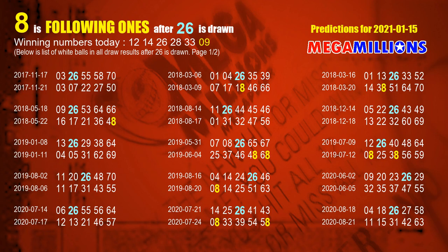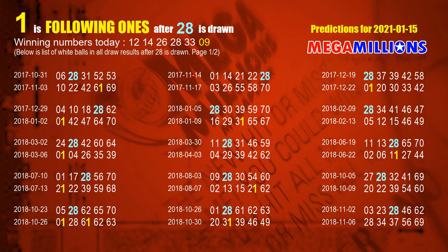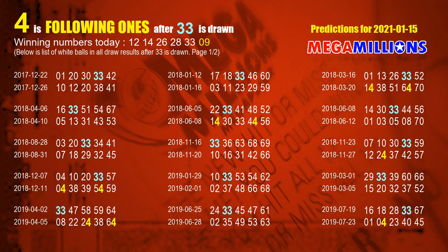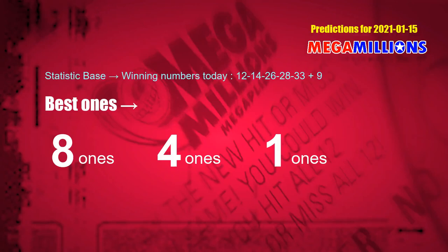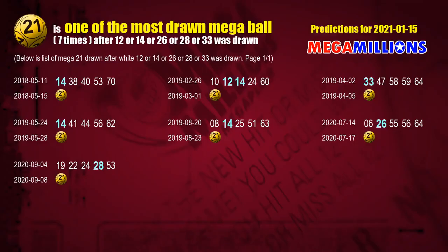The third white ball is 26. The most frequently following units digit is 8 when 26 is the winning number in the last draw. The fourth white ball is 28; the most frequently following units digit is 1. The fifth white ball is 33; the most frequently following units digit is 4. According to these statistics, with white balls 12, 14, 26, 28, 33 drawn today, the frequent following ones are 8, 4, and 1.